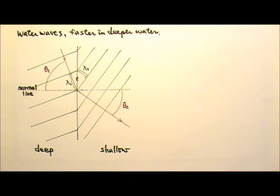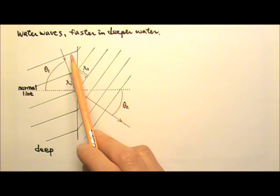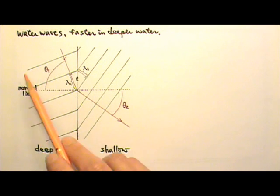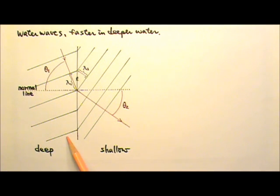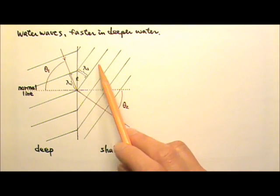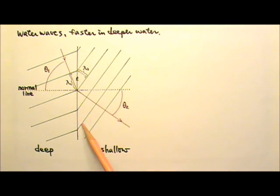One way to see why the waves bend this way is to pretend that every wave front is a row of marching soldiers. The deeper water side is like dry land where soldiers can march fast. The shallower side is like a muddy region. Soldiers slow down as soon as they enter the muddy region and fall behind. It makes sense for the waves to bend this way.